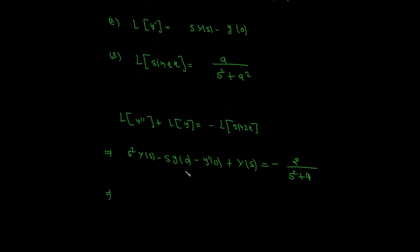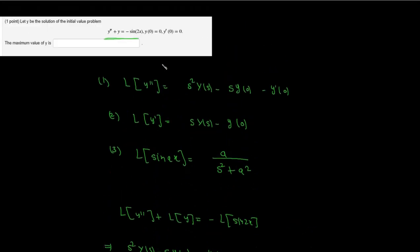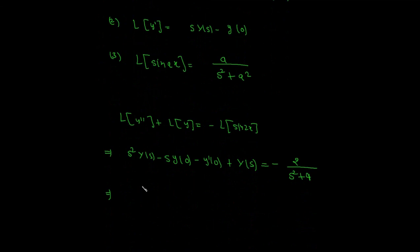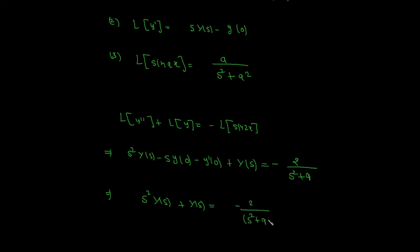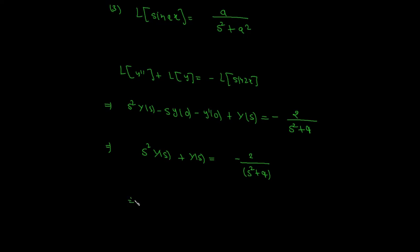In this question it is given that y(0) is equal to 0 and y prime(0) is equal to 0. Substituting these values, Y(s) equals negative 2 over s squared plus 4, so s squared plus 1 times Y(s) equals negative 2 over s squared plus 4.